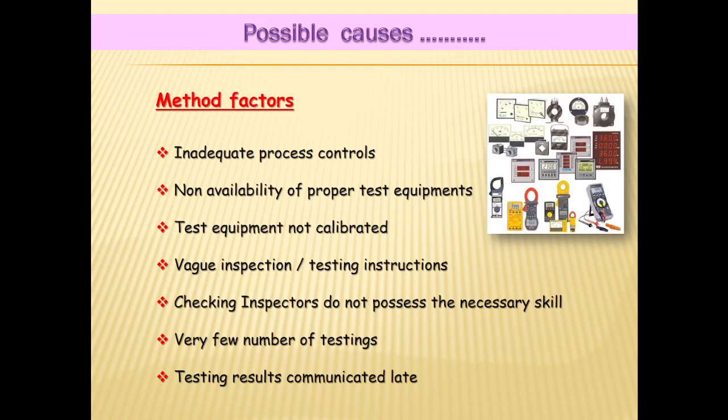What are the possible causes due to the Method factor? Inadequate process controls, non-availability of proper testing equipment, testing equipment not calibrated, vague inspection or testing instructions, inspectors who do not possess the necessary skill, not following SOPs, very few instances of testing, and testing results not communicated or communicated late.